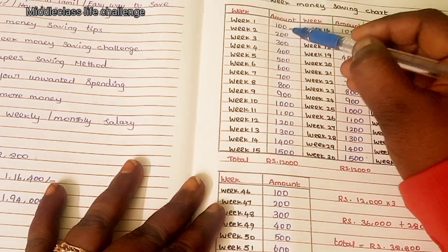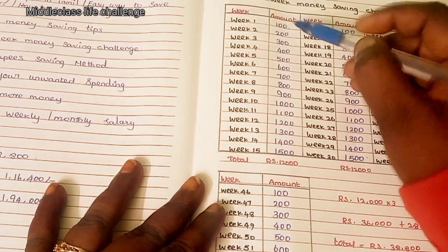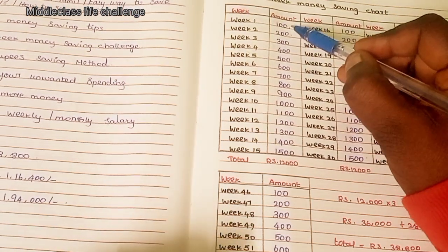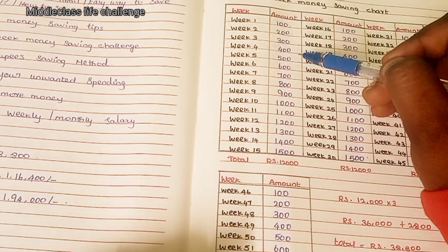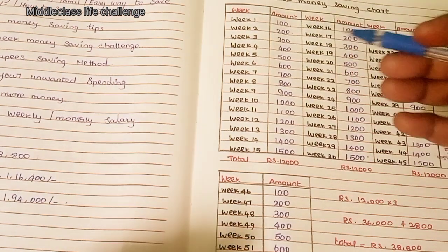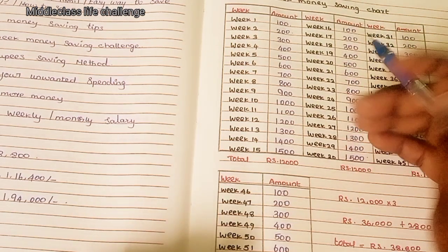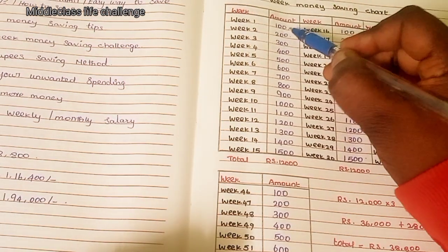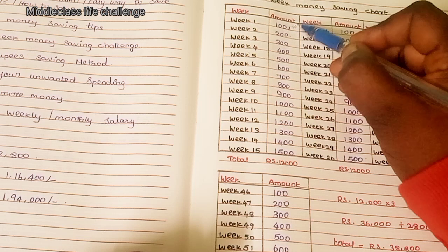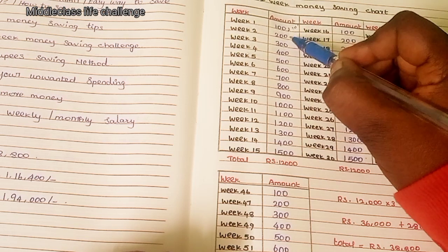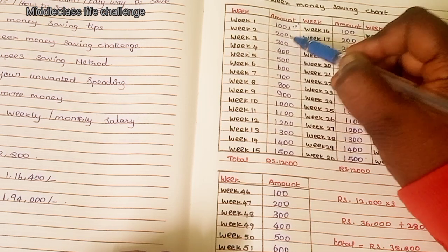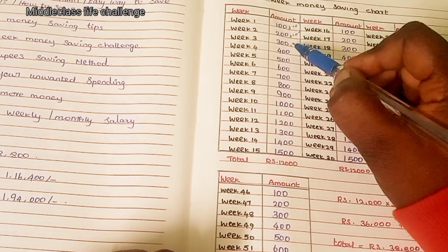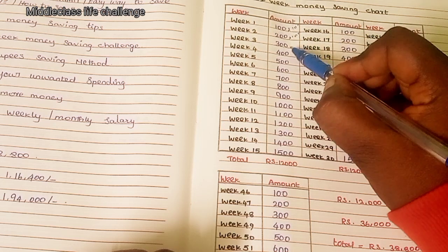In the first week, you will get 100 rupees. In the second week, you will get 200 rupees. Then we will add 100 rupees. So we will add 100 rupees — the first week is 100 rupees, plus 100 is the second week is 200. This is also plus 100 rupees. In the third week, we will get 300 rupees.